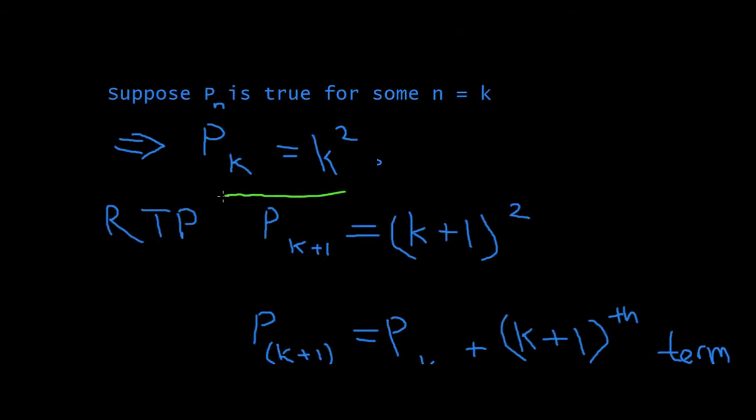Then, if this is true, then we are required to prove, RTP means required to prove, that Pk plus 1 is equal to K plus 1 squared. Which makes sense. I mean, if this is the K term, then just add 1 to it, it should be true.